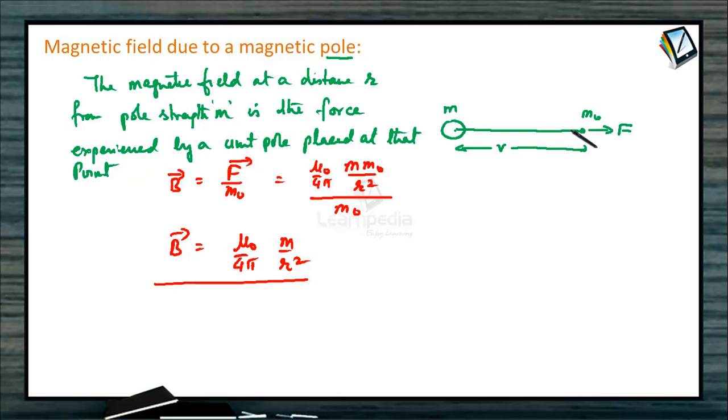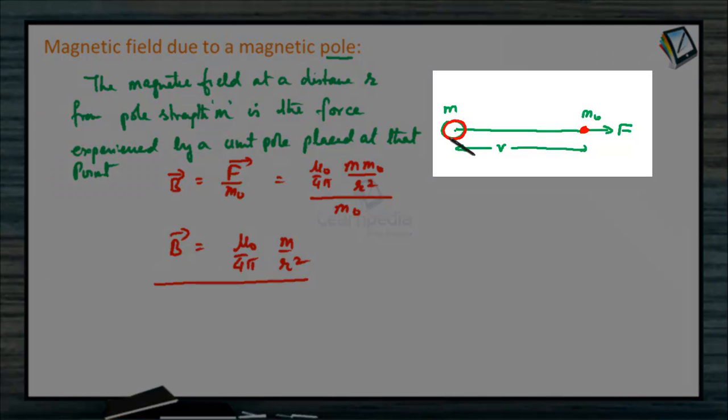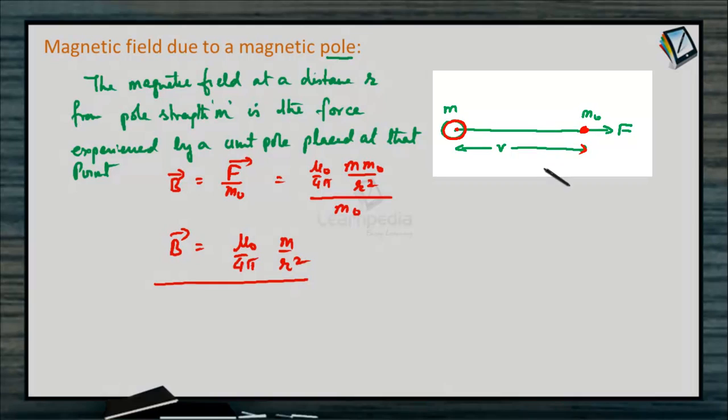This is the magnetic field at this point due to this pole. This is the north pole or south pole with pole strength M. From this pole at a distance R, the magnetic field can be calculated like this.